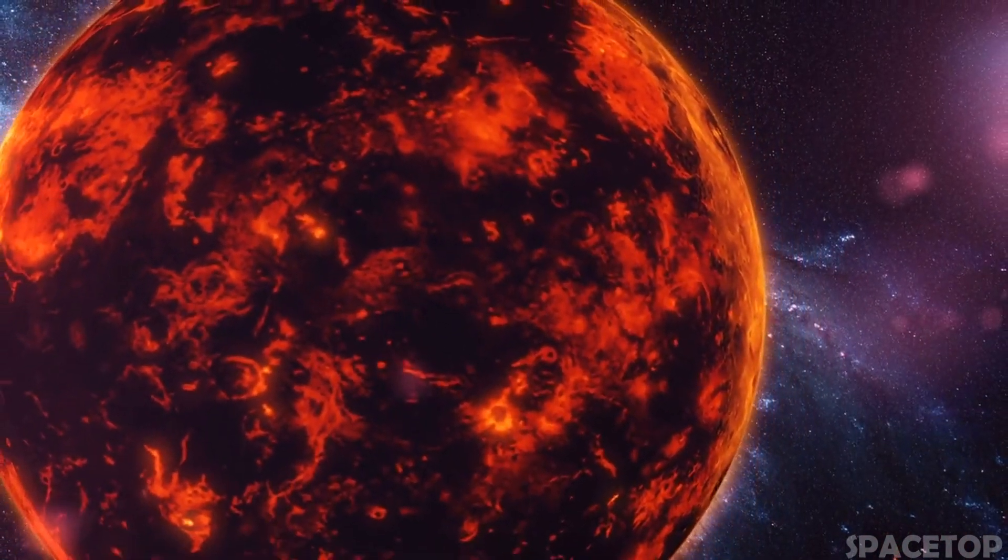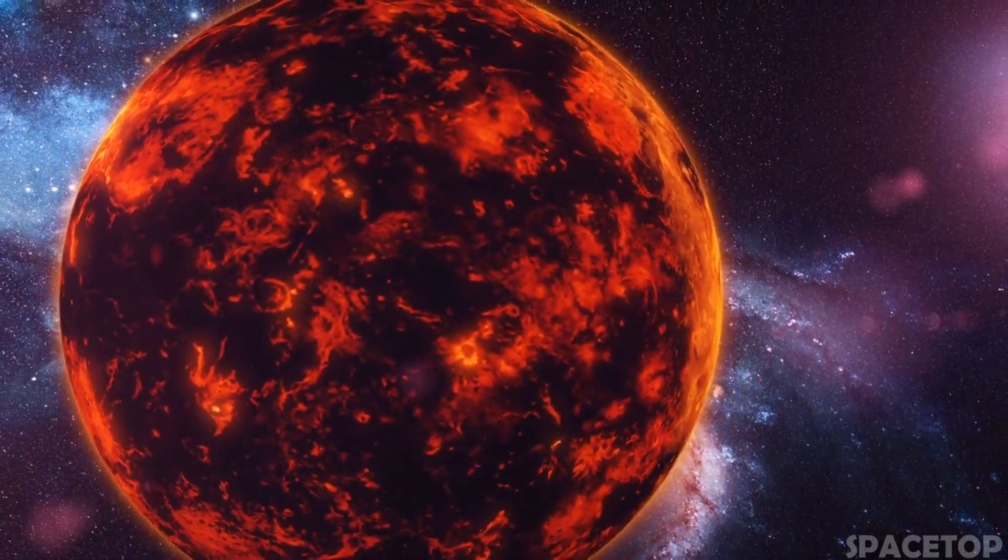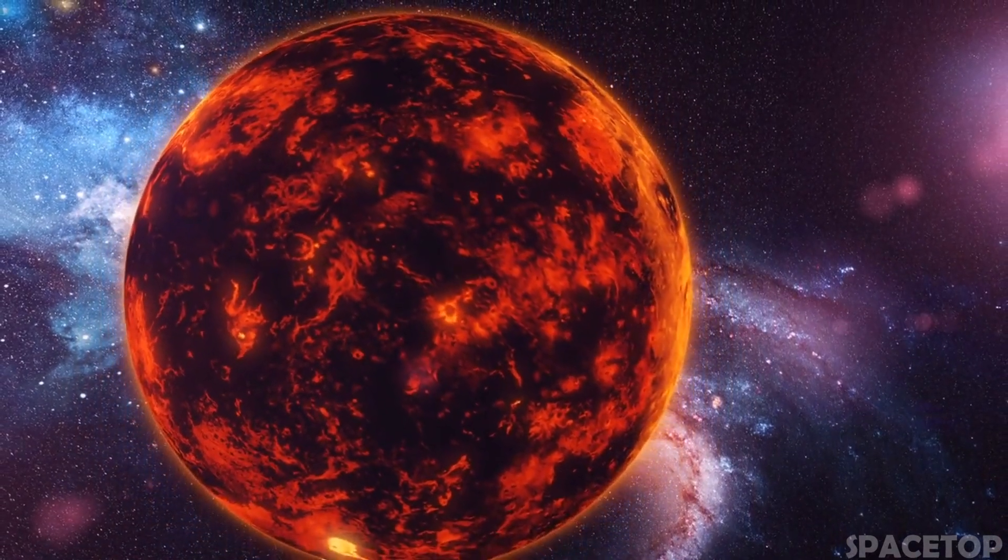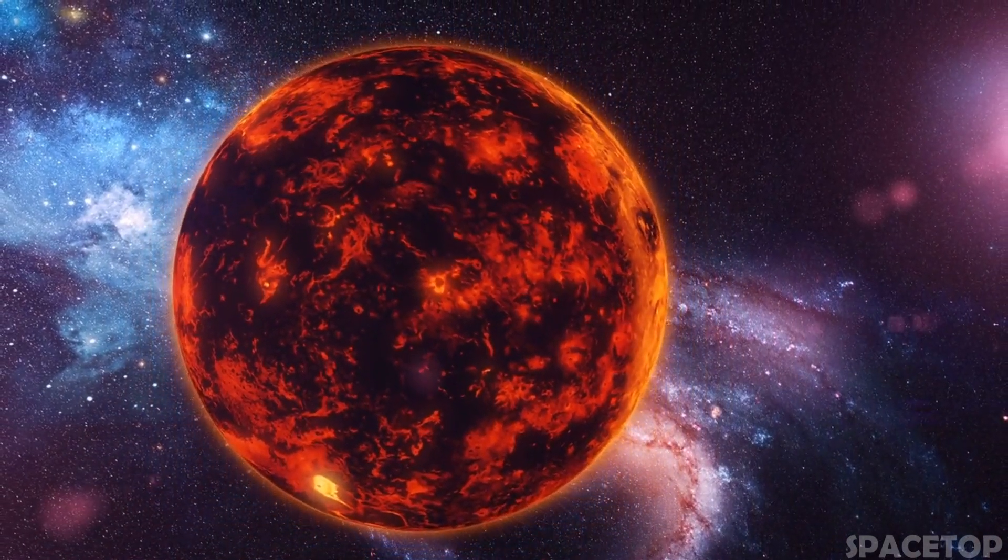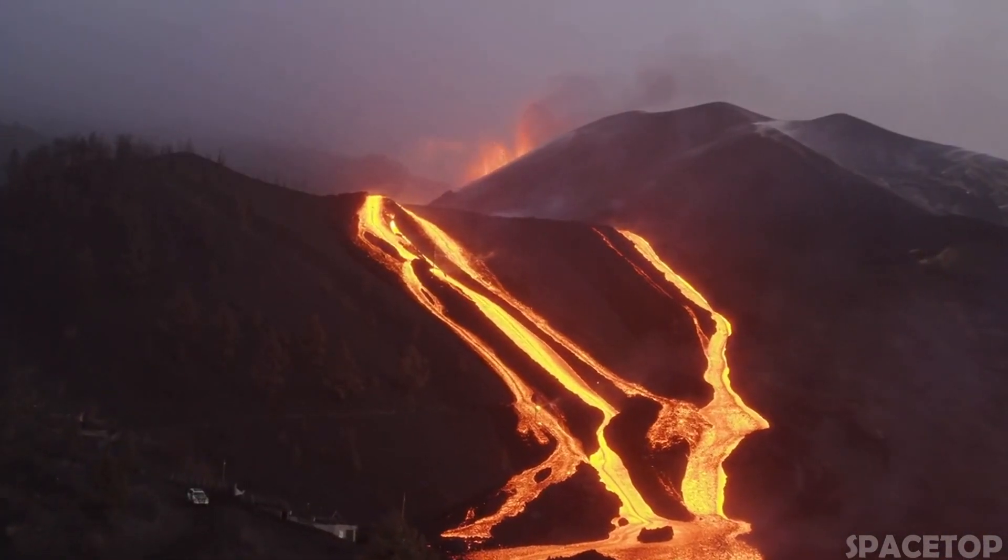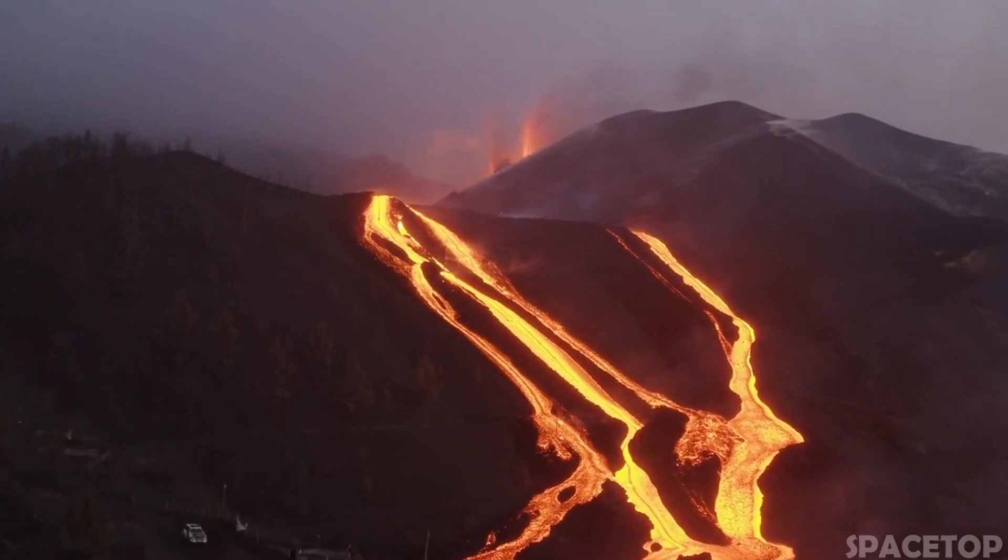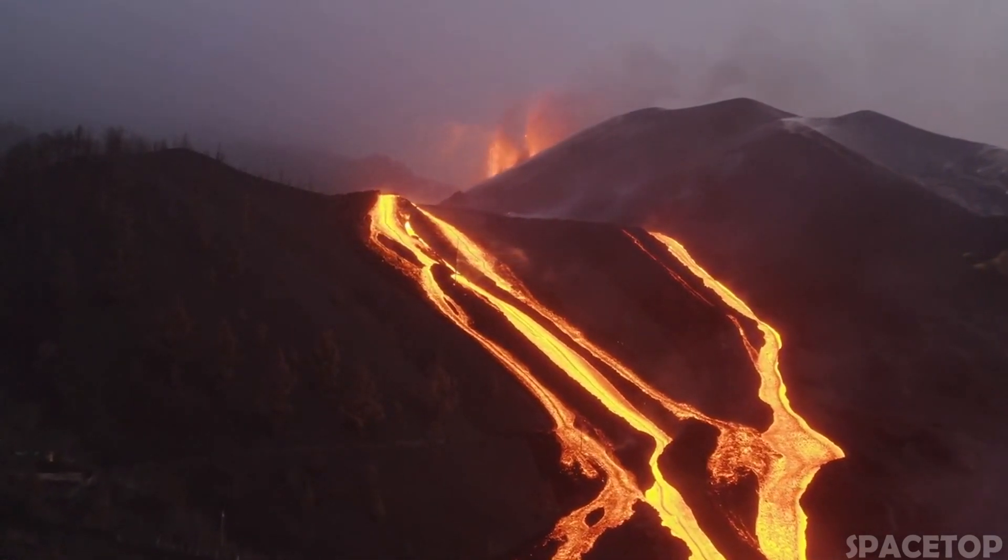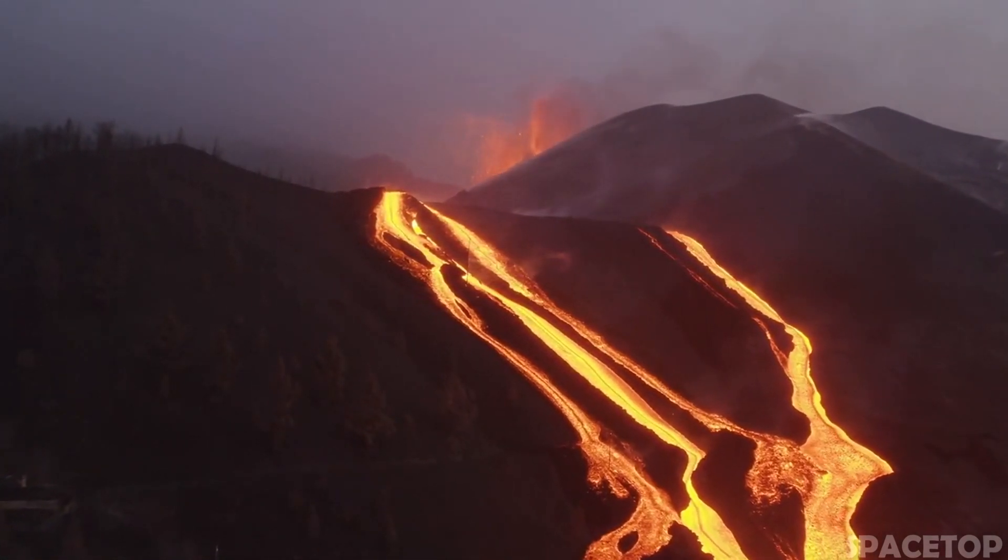But about 18 million years ago, the star passed the red giant stage. As a result of the fact that the planet spent a significant amount of time inside its now-dead star, only a red-hot iron core remained of it. Scientists believe the planet is still evaporating, which could eventually make it even smaller.